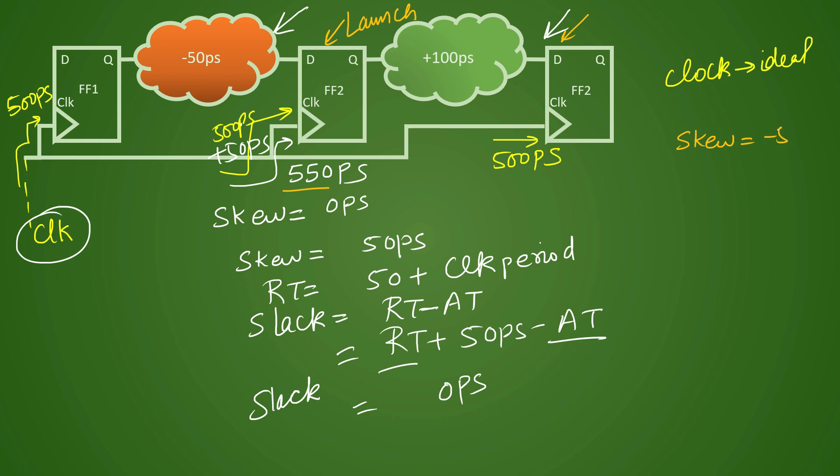And here now if you try to calculate your skew will be minus 50 picoseconds and because of that what will happen effectively at the end is your slack will reduce by the same amount and it will be plus 100 minus 50 and it will be actually 50 picoseconds. So since you had enough margin in this particular path you will still see that timing is met here and you will see that timing is met in your previous path also and that is what the concept of useful skew is.